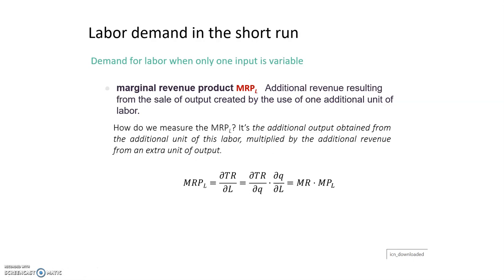The marginal revenue product of labor is the additional output — the additional quantity obtained from the additional unit of labor — multiplied by the additional revenue from an extra unit of output. Formally, it is the derivative of total revenue with respect to labor. We can compute this by multiplying and dividing by dQ, giving us dTR/dQ times dQ/dL. The first part, dTR/dQ, is the marginal revenue, and the second part, dQ/dL, is the marginal product of labor.